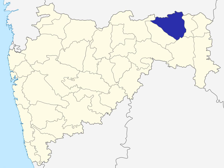The current district collector is Abhishek Krishna. Nagpur district is made up of the following administrative bodies: Nagpur Municipal Corporation, Nagpur Improvement Trust, Narkhed Municipal Council, Katol Municipal Council, Savner Municipal Council, Ramtek Municipal Council, Mouda Municipal Council, Kamptee Municipal Council, Umred Municipal Council, and Kalmeshwar Municipal Council.